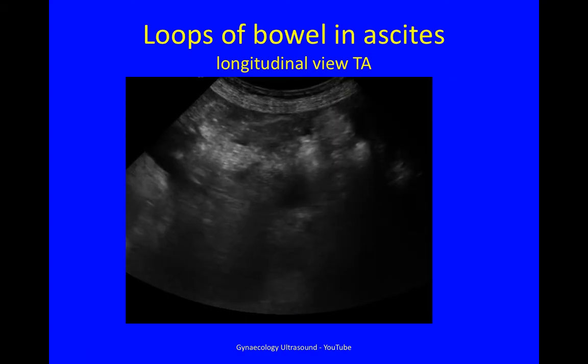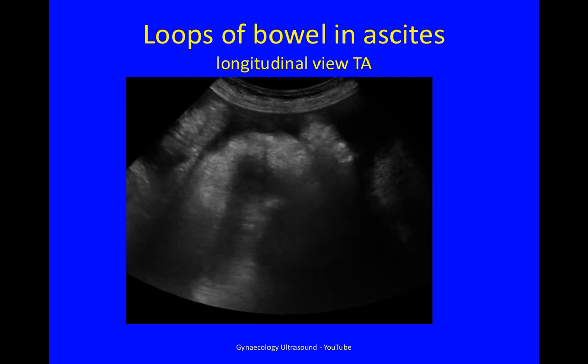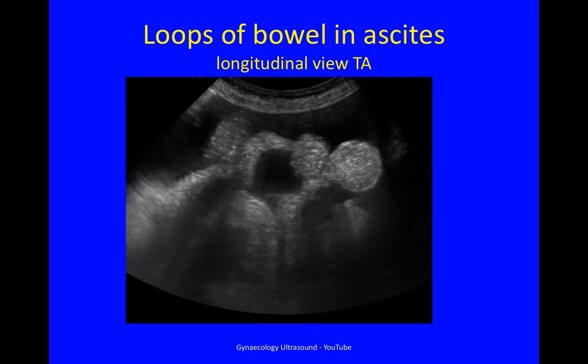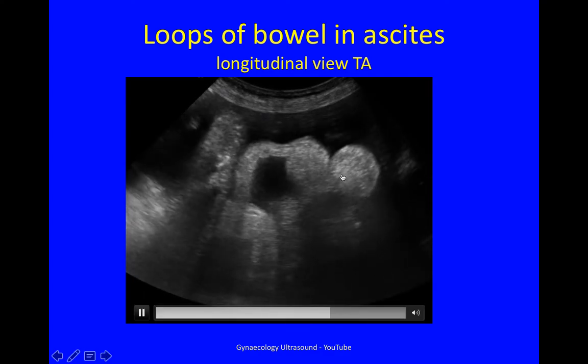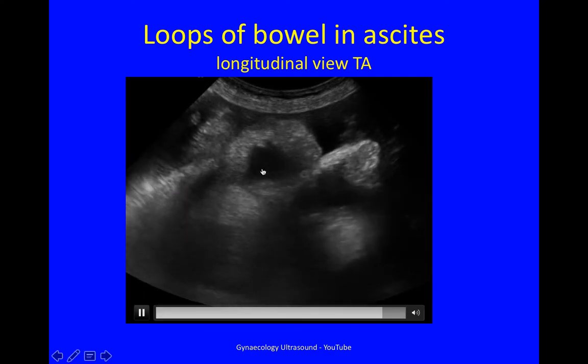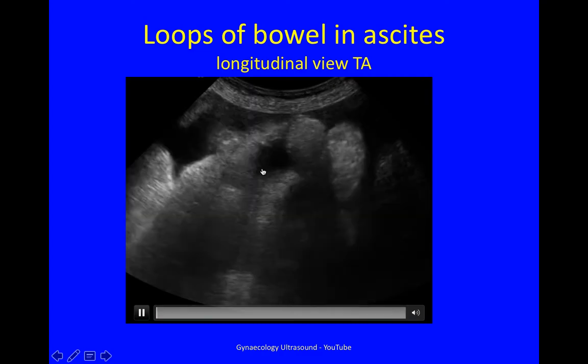Here again, longitudinal view, transabdominally in the epigastric region. You can see loops of small bowel on the mesentery, floating in ascites.